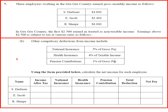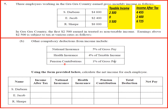Part B: other compulsory deductions from income include national insurance at 5% of gross pay, health insurance at 4% of taxable income, and pension contribution at 1% of gross pay. These are compulsory deductions by law. Using the form provided, calculate the net income for each employee. We place these deductions in the appropriate columns, total them, and subtract from income after tax to get net pay. First we bring across the taxable income and income after tax from the previous part.